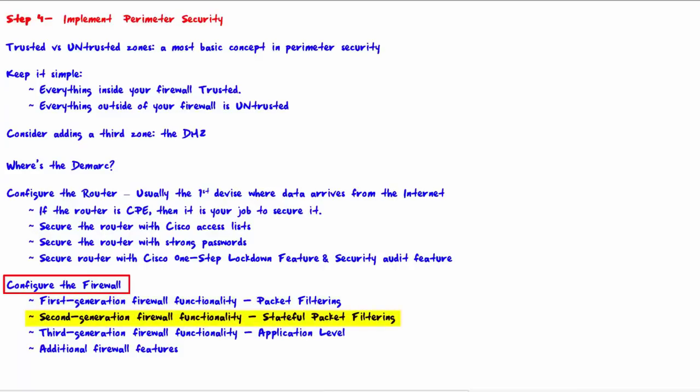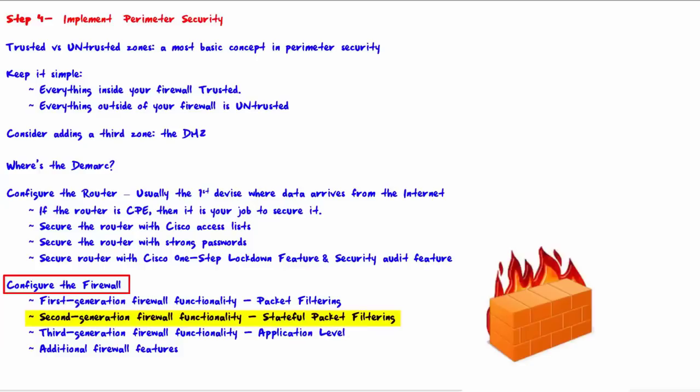Second-generation firewall functionality is stateful packet filtering, which occurs at layers 1, 2, 3, and 4 of the OSI model. The addition of layer 4 — the transport layer — allows the use of connection state. The firewall records all connections passing through it and determines if any packet is part of an existing connection, the start of a new connection, or not part of any connection at all.